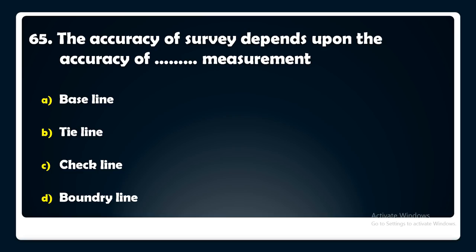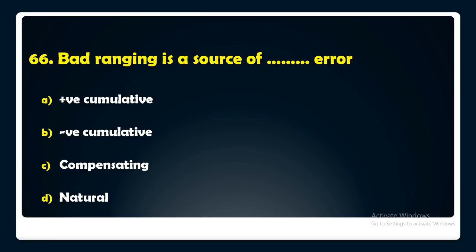Bad ranging is a source of — positive cumulative error, negative cumulative error, compensating error, or natural error? The answer is: bad ranging is a source of positive cumulative error.